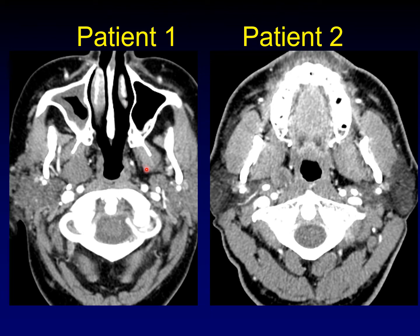Both patient one and patient two have lesions that are replacing the parapharyngeal fat. Here's the normal parapharyngeal fat on the left side, and here is the mass replacing or displacing it on the right. This one is a little more directly pre-styloid; this one is a little more medial. That is not a big difference in the way it is displacing the parapharyngeal fat.